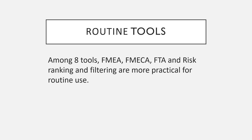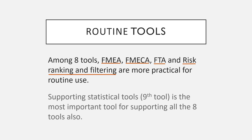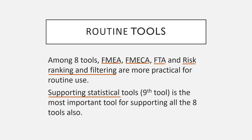Among the eight routine tools, FMEA, FMECA, FTA, and risk ranking and filtering are the most practical for routine use. The ninth tool — statistical tools — is the most important supporting tool for all eight. Out of the nine total tools, FMEA, FMECA, FTA, and risk ranking and filtering are very useful for routine risk management. Statistical tools are useful for evaluating the numerical data generated during application of the other tools.